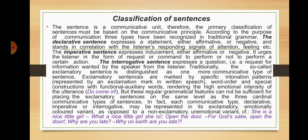Now we'll talk about the classification of sentences. The sentence is a communicative unit; therefore, the primary classification must be based on the communicative principle. According to the purpose of communication, three types have been recognized in traditional grammar. The declarative sentence expresses a statement — either affirmative or negative — and stands in correlation with the listener's responding signals of attention, feeling, etc. The imperative sentence expresses inducement — either affirmative or negative — urging the listener in the form of request or command to perform or not perform a certain action.